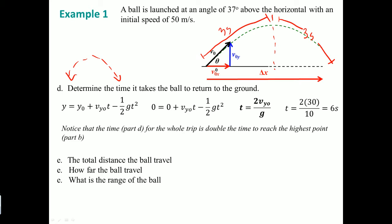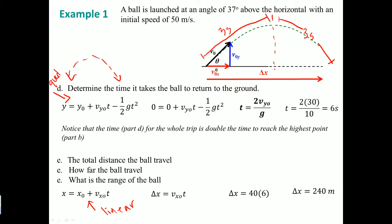For part E, whether the exam asks for total distance, how far the ball travels, or the range of the ball, it is asking the same thing — Delta X. The equation used here is linear, not quadratic, because the T-squared term drops out when you already have the time component. This gives you the horizontal range of the projectile.